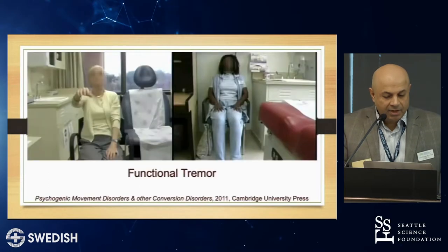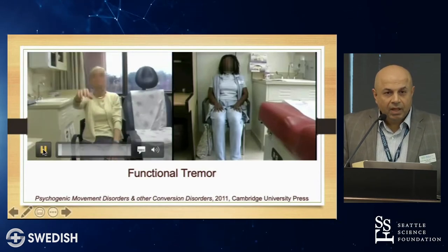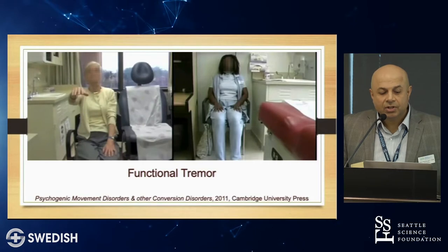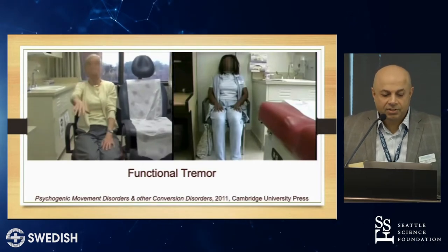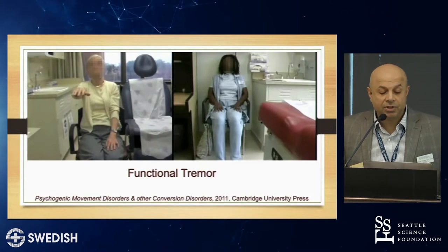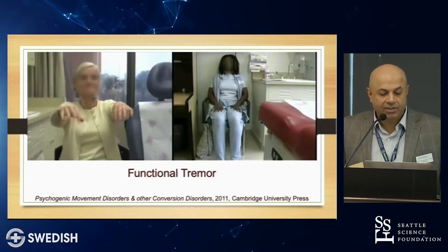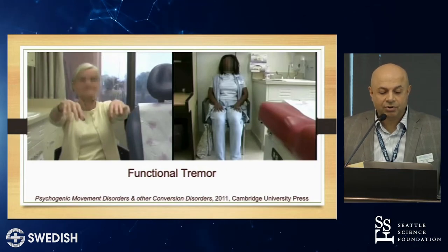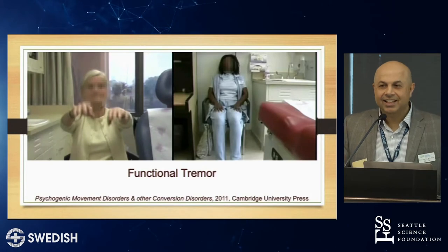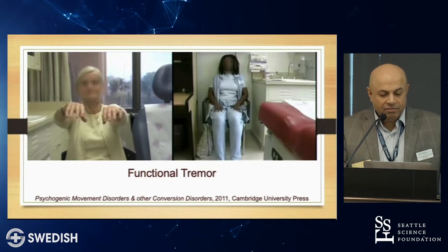Let's jump into phenomenology and the videos. What I want you to notice is the frequency of the tremor and how it changes — that's called entrainment. It changes with contralateral activation, which shouldn't happen in a movement disorder tremor like essential tremor or Parkinsonian tremor. The gentleman is distracting the woman or activating the contralateral side, and now the phenomenology changes. That's a very good sign — that's a functional tremor, which is physiologically impossible to produce if you have Parkinson's or essential tremor.